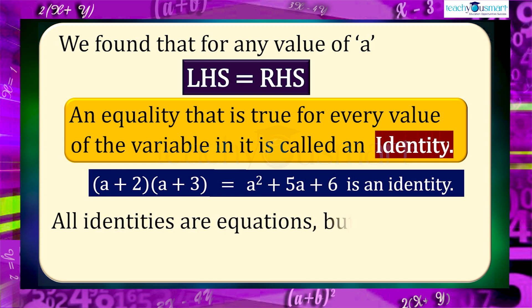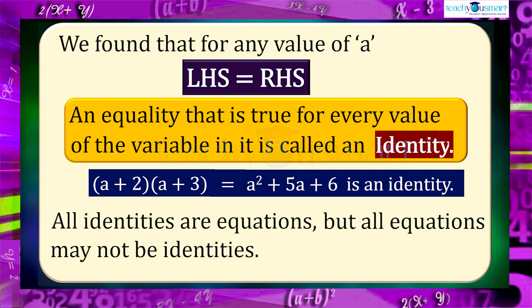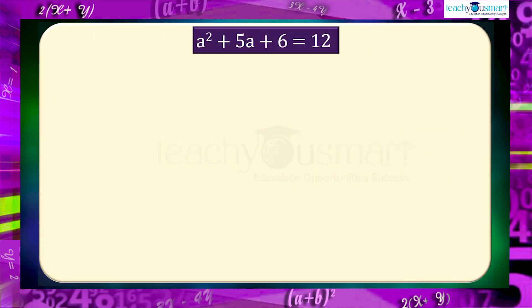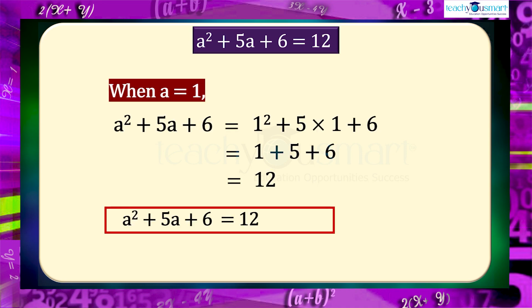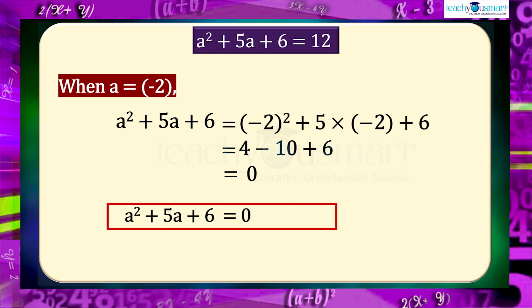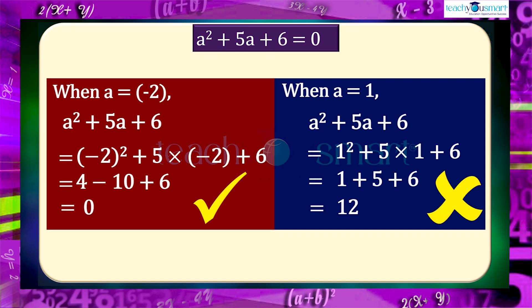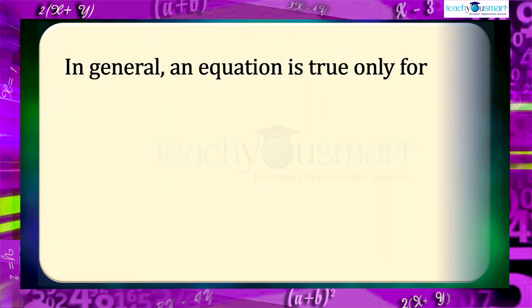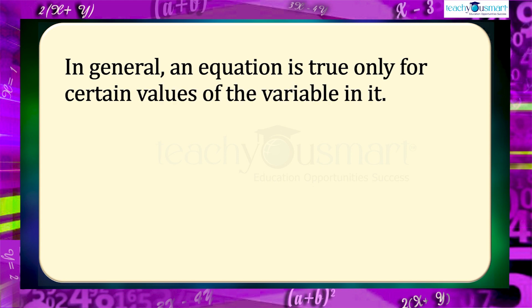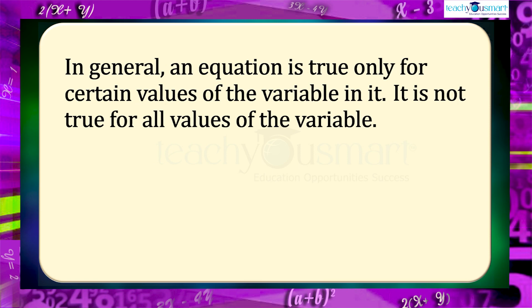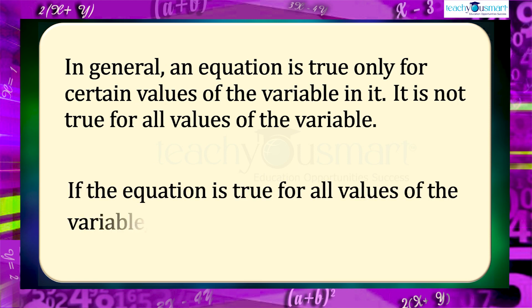All identities are equations, but all equations may not be identities. Consider the equation a² + 5a + 6 = 12: it is true for a = 1, but when a = -2 the value becomes 0, so it is not true. Similarly, a² + 5a + 6 = 0 is true for a = -2 but not for a = 1. In general, an equation is true only for certain values of the variable, not all values. If an equation is true for all values of the variable, then it is called an identity.